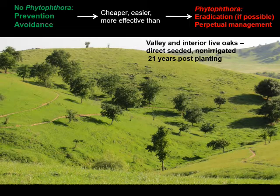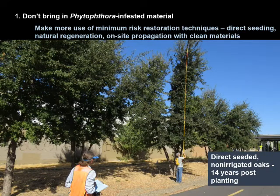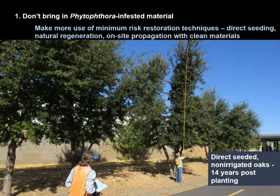Here's a planting that was done by direct seeding, and we see there's no risk associated with direct seeding, certainly compared to planting with nursery stock, and these plants are doing quite well. Here's another example of direct-seeded valley oaks planted from acorns along the site — they're 14 years old and doing quite well, with no risk associated with nursery stock.